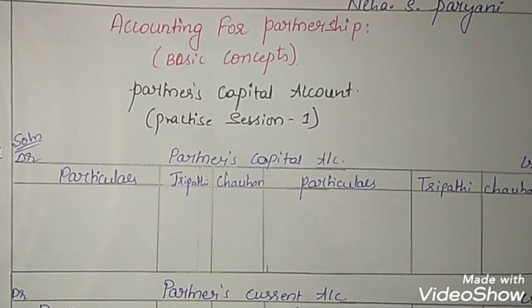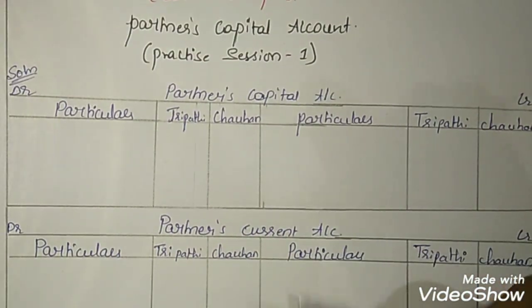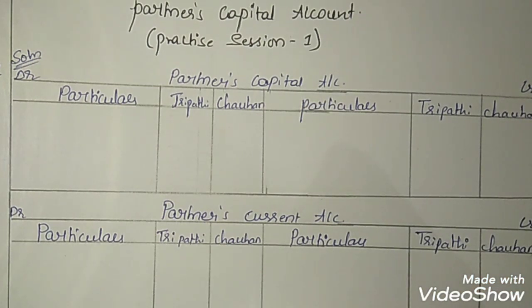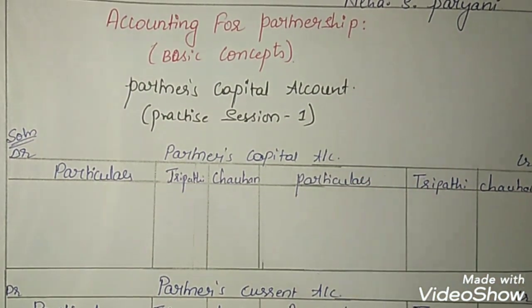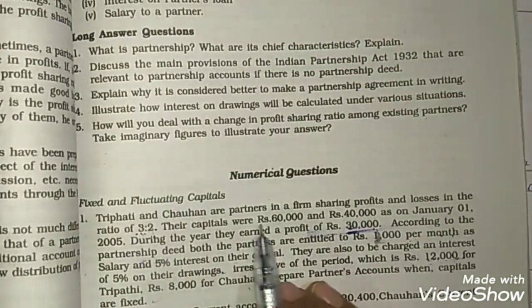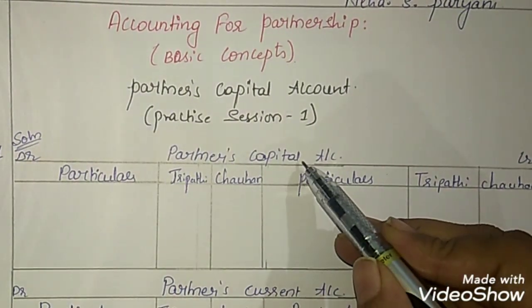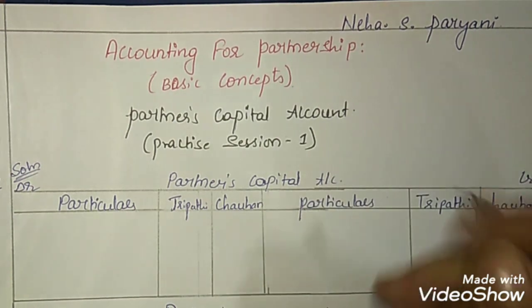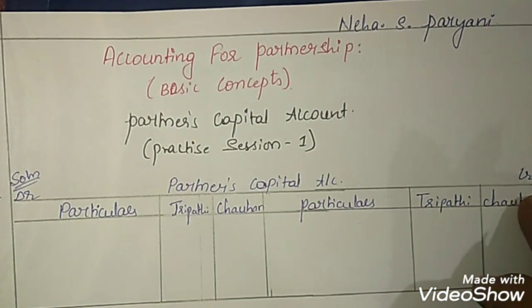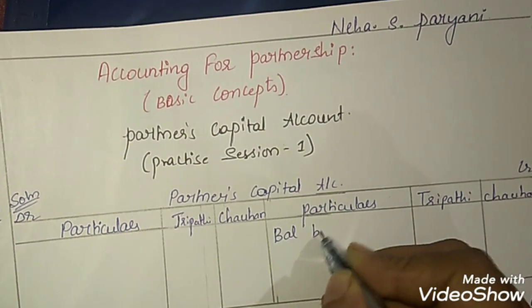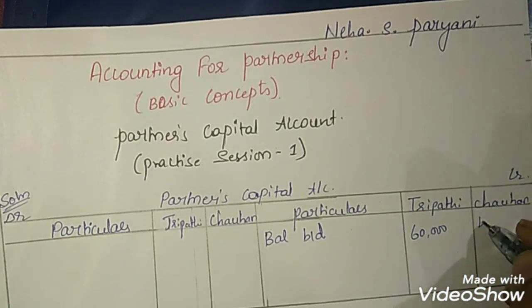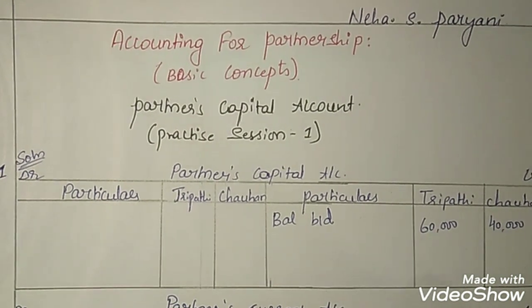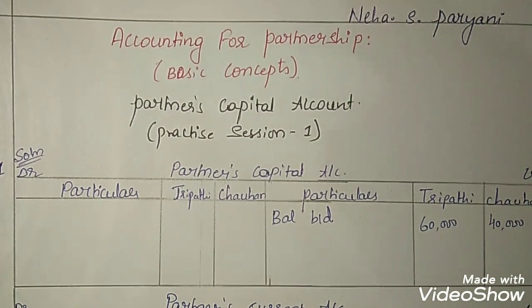In the fixed capital method, we have to prepare two different accounts: partners capital account and partners current account. In the partners capital account, we should only take entries relating to the capital. The capitals given are Rs. 60,000 and Rs. 40,000. Capital is a liability, so the opening balance of the liability account starts on the credit side — take it as balance brought down: 60,000 in Tripathi's column and 40,000 in Chauhan's column. Other than this, we don't have any entry relating to the capital.